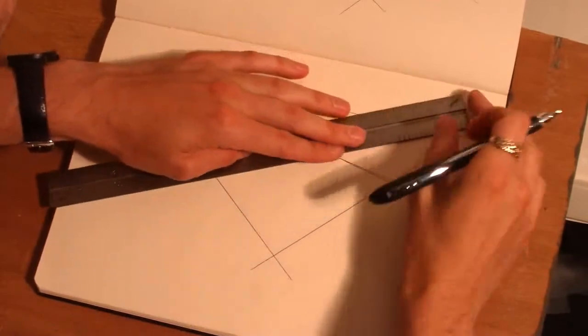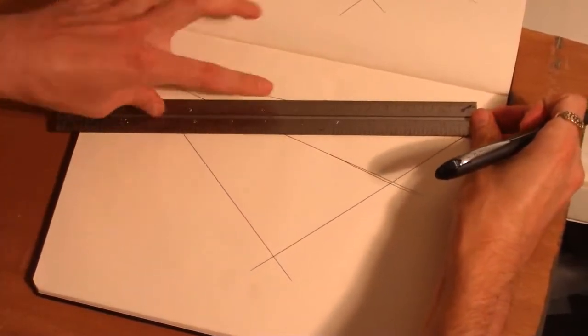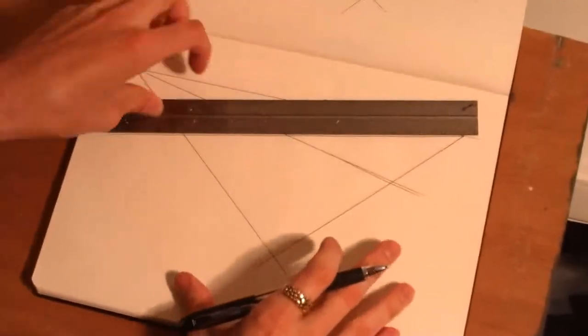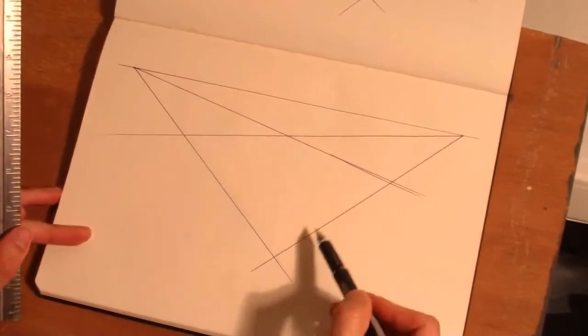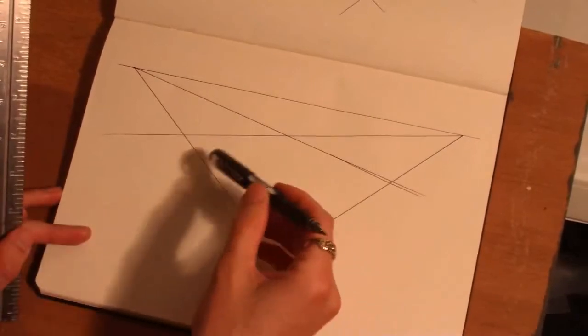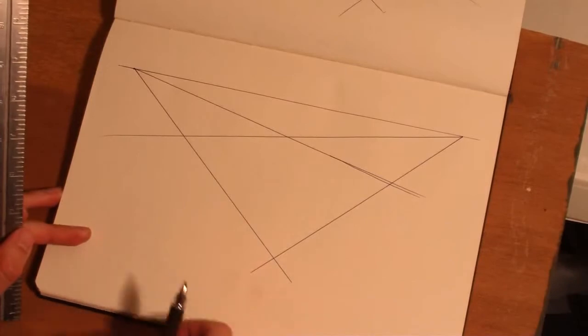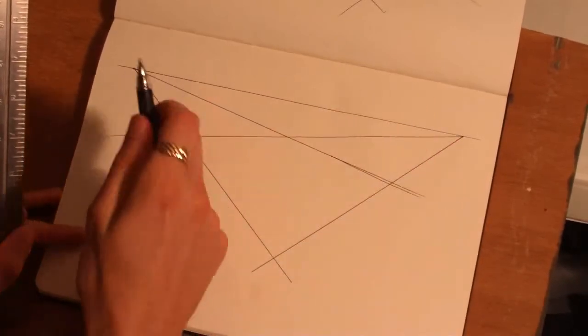You want two going through each vanishing point and you want them all to intersect each other. So now we have a plane defined here. And even though it looks like it's a funky shape, you have to be able to imagine it in your head as a rectangle. These technically are 90-degree angles. We're just seeing them in perspective.